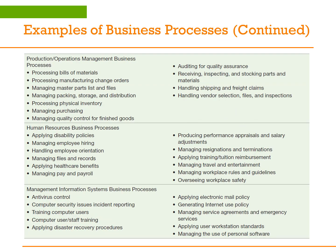The table also provides examples of production and operations management processes and HR business processes. Of course, there are processes within management information systems — for example, we're concerned with security issues such as antivirus control and training. We want to generate different policies, manage services, and oftentimes have a help desk. All of these are related to information systems.